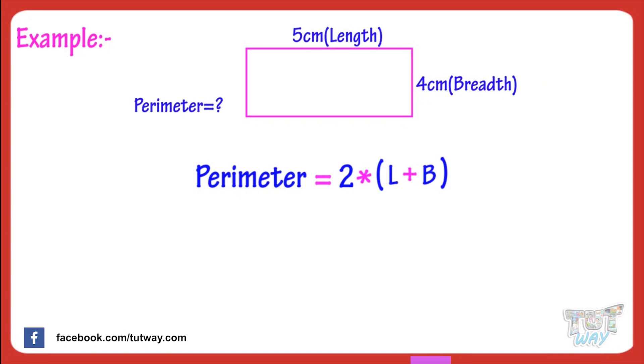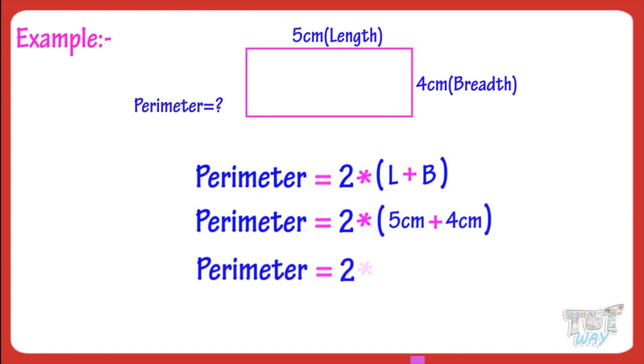So, putting the values of length and breadth in the formula, perimeter equals 2 multiplied by 5 plus 4. Perimeter equals 2 multiplied by 9.